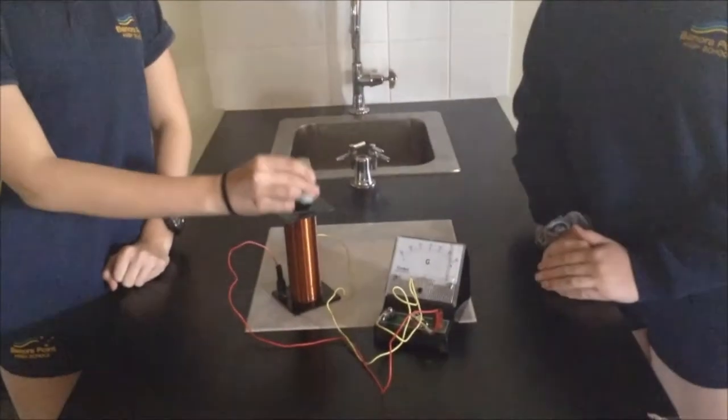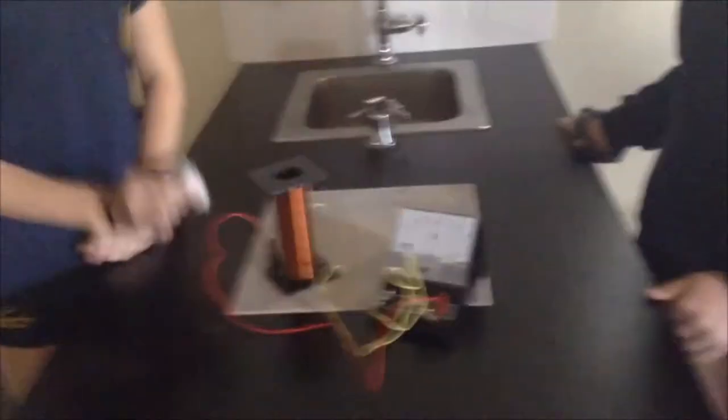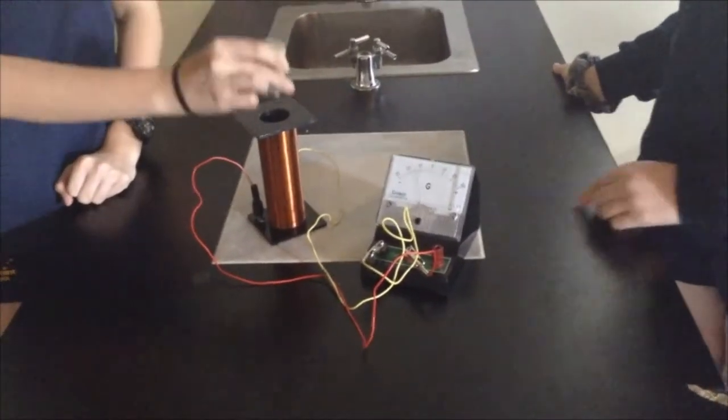Faraday found that moving a magnet in a coil generates electricity. Only when the magnet moves, there is a change in magnetic flux. The needle moves one way and then the other. This is an alternating or AC current.